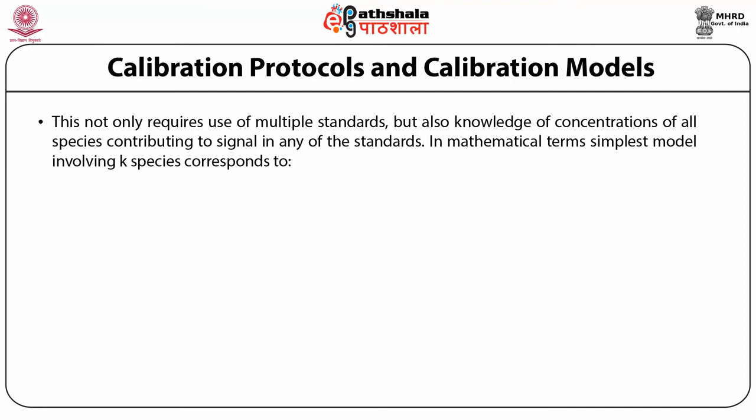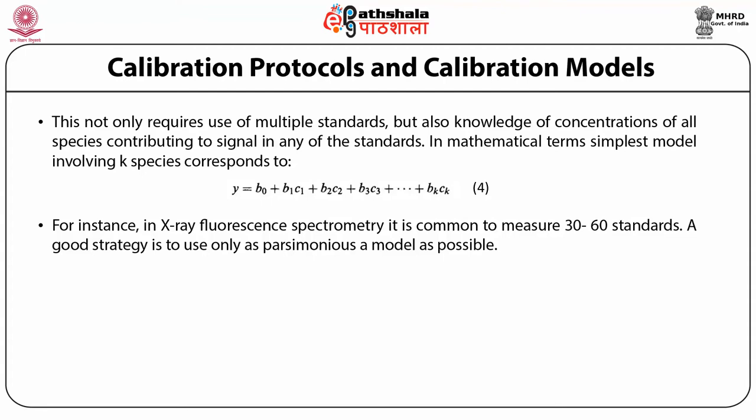This not only requires the use of multiple standards but also the knowledge of the concentrations of all species contributing to the signal in any of the standards. In mathematical terms, the simplest model involving k species corresponds to: y = b0 + b1·c1 + b2·c2 + ... + bk·ck, but much more involved hyperbolic and sigmoid models are also in use. For instance, in X-ray fluorescence spectrometry it is not uncommon to measure 30 to 60 standards. A good strategy is to use only as parsimonious a model as possible, tested by a formal statistical procedure to avoid overfitting.